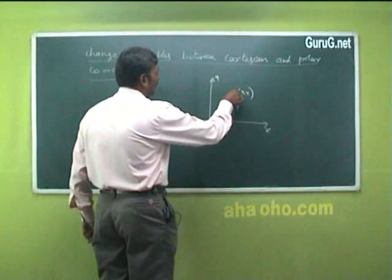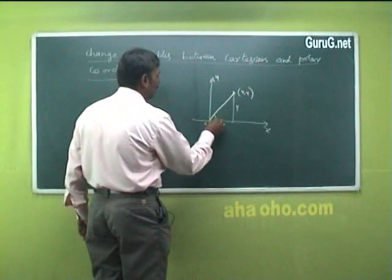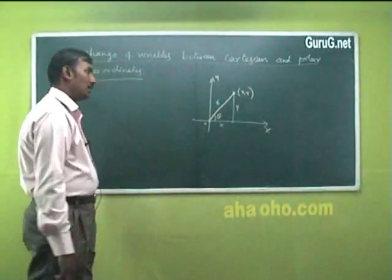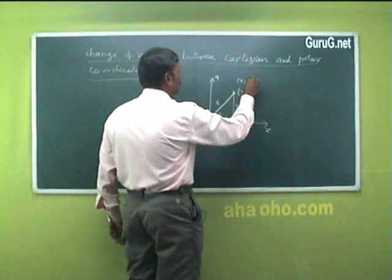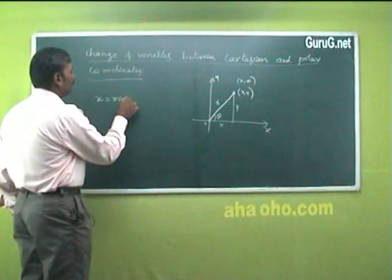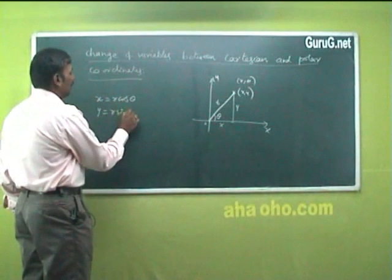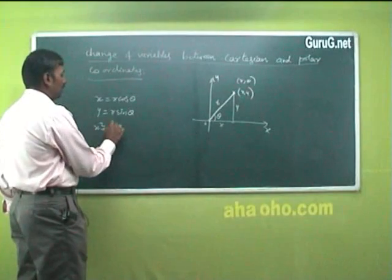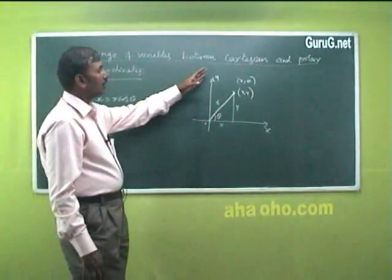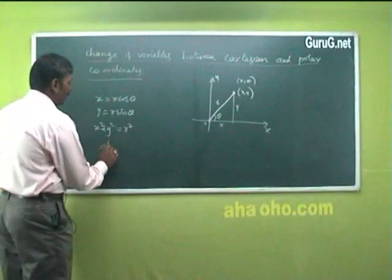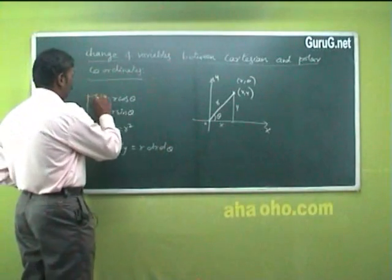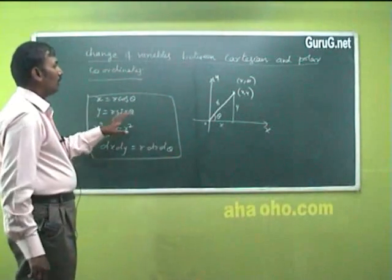The same point can be plotted by knowing this angle theta and the distance from the origin to the point, r. So whenever r and theta are given, it is polar coordinates. The same point we can represent as (r, theta). Now what is the relation? x equals r cos theta, y equals r sin theta, and x² plus y² equals r². So using this transformation, we convert Cartesian to polar, and dx dy equals r dr dθ.